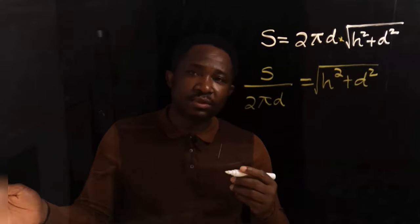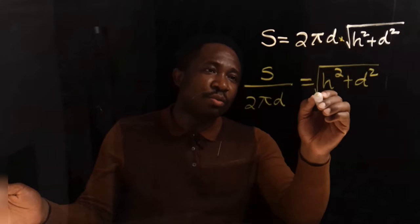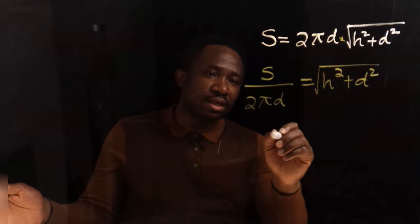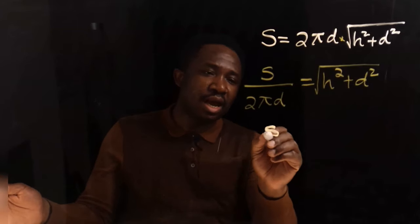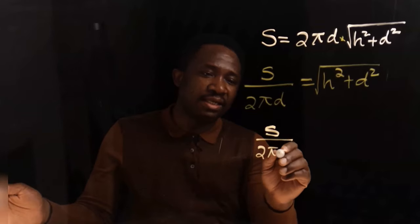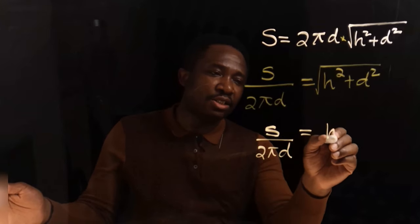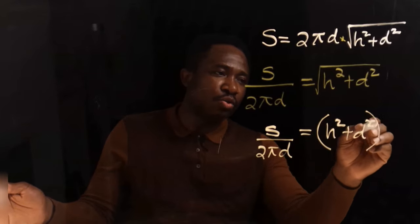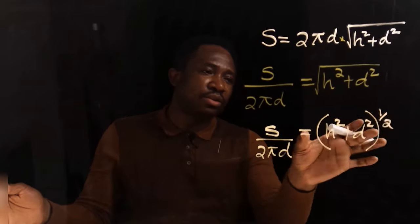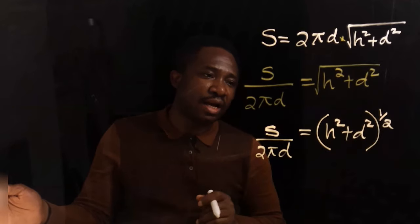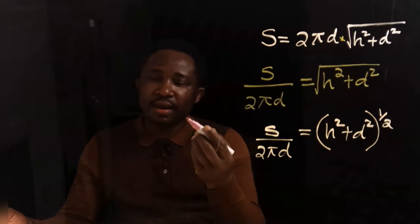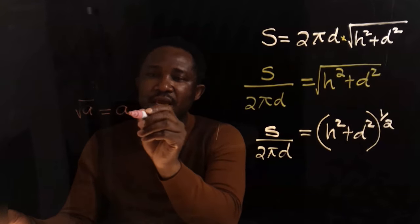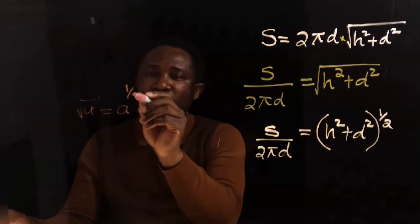On this side we have h squared plus d squared, all under a square root. Next we're going to remove this square root and move it to the other side. This can be written as s over 2πd equals h squared plus d squared, all to the power of 1 over 2. This and this are the same.